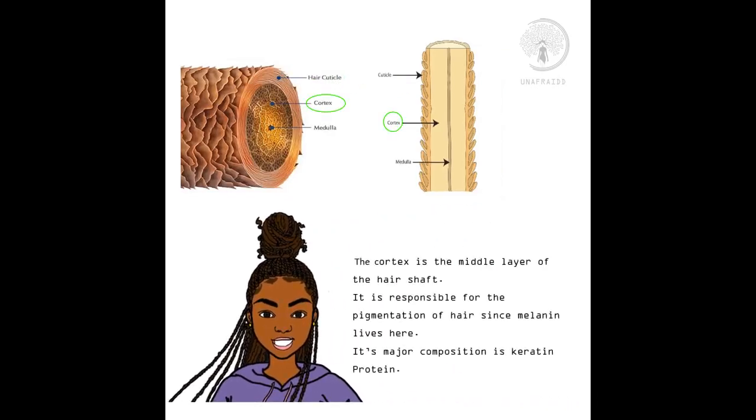The cortex is the middle layer of the hair shaft. It is responsible for the pigmentation of hair since melanin lives here. Its major composition is keratin protein.